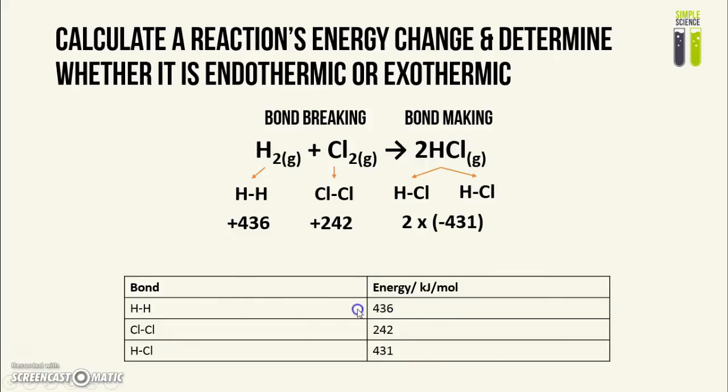This is just every number here - the H-H bond is 436, the Cl-Cl is 242, and for H-Cl you can see it's negative, but you have to multiply it by 2 because there are 2 of them. From here you just add these things together and you get a negative number for this case.